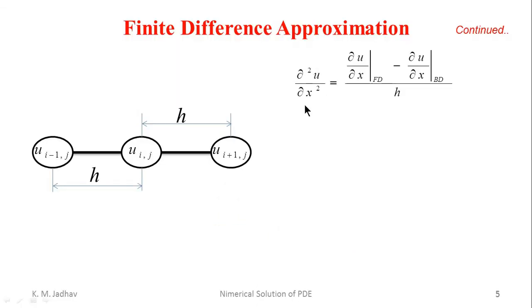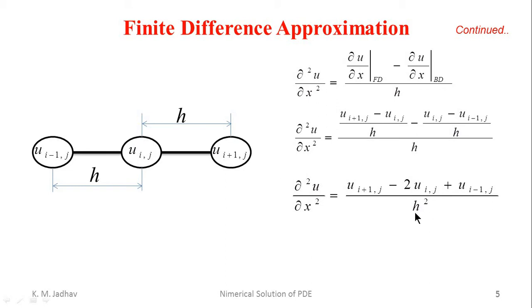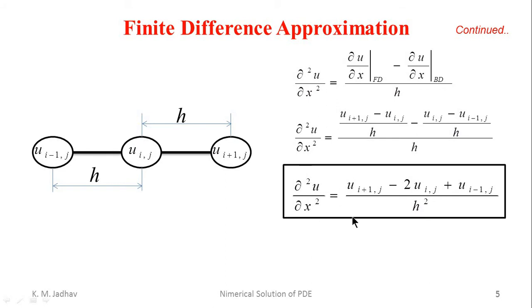Now we will find the second-order approximation of u with respect to x, that is ∂²u/∂x². The second-order approximation can be written as the first-order forward difference approximation minus the first-order backward difference, divided by the step size in the x-direction, h. Substituting values, we get ∂²u/∂x² = (u[i+1,j] − 2u[i,j] + u[i-1,j]) / h². This is the second-order approximation of u with respect to x.